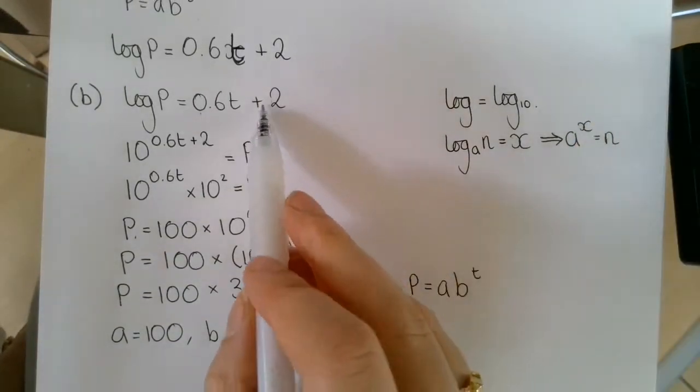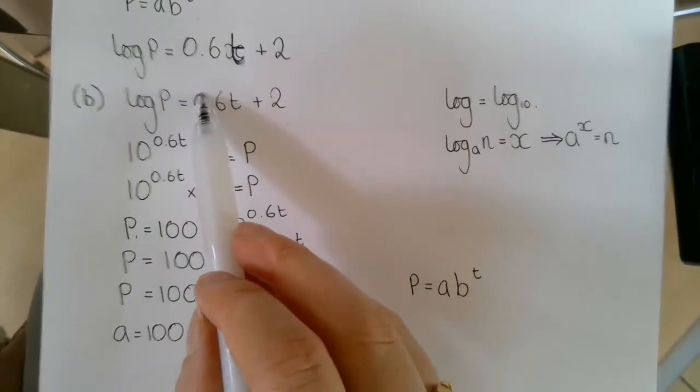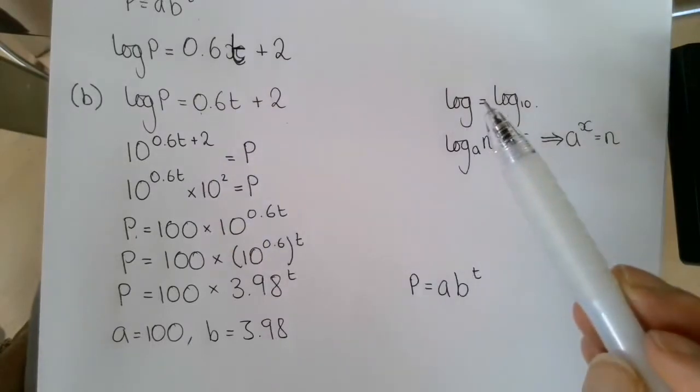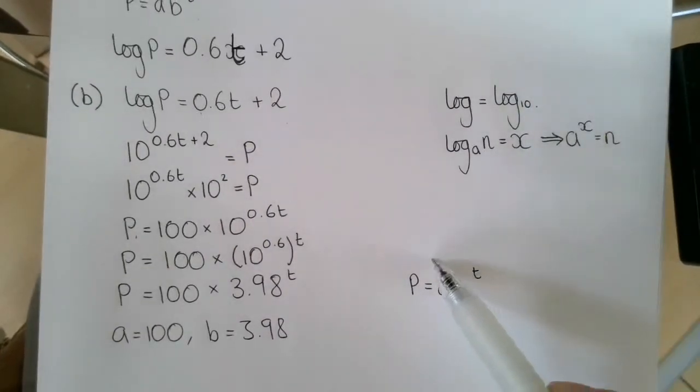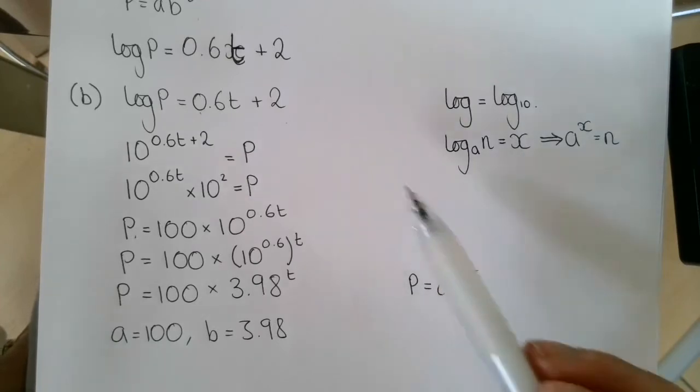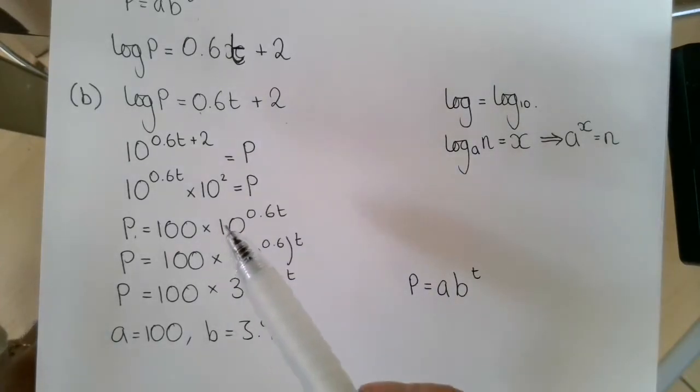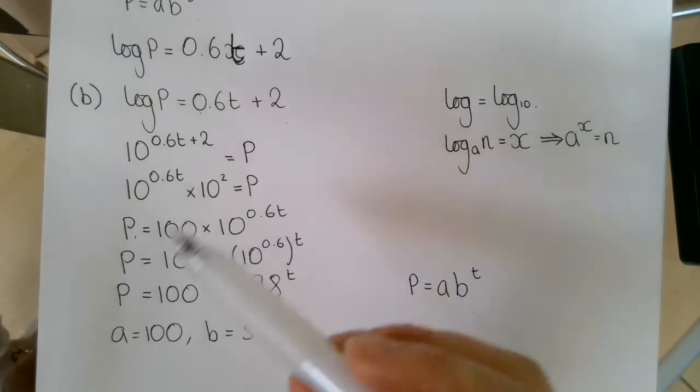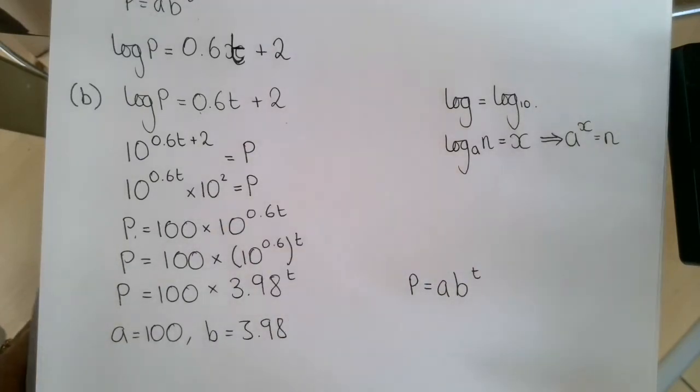So we started off with our logarithm here, that was based on that straight line graph. And we've rewritten it in terms of p equals ab to the power of t. So rewritten it as the scientist suggests that this growth can be modeled by that equation to find our values of a and b.